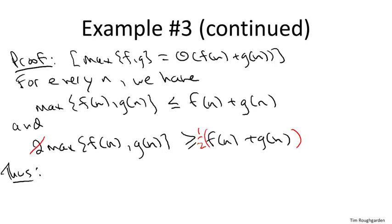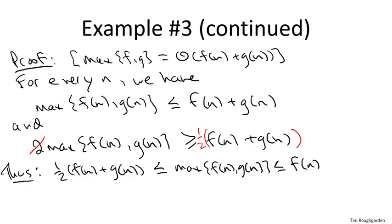And now we're pretty much home free. Right? So what does this say? This says that for every possible n, the maximum is wedged between suitable multiples of the sum. So one half, f of n plus g of n, is a lower bound on the maximum. This is just the second inequality that we derived. And by the first inequality that's bounded above by once times the sum.